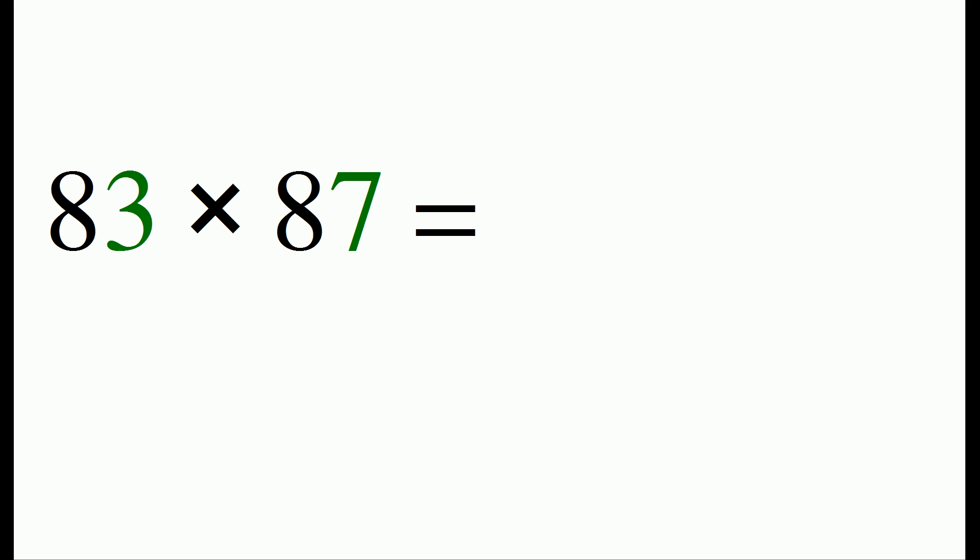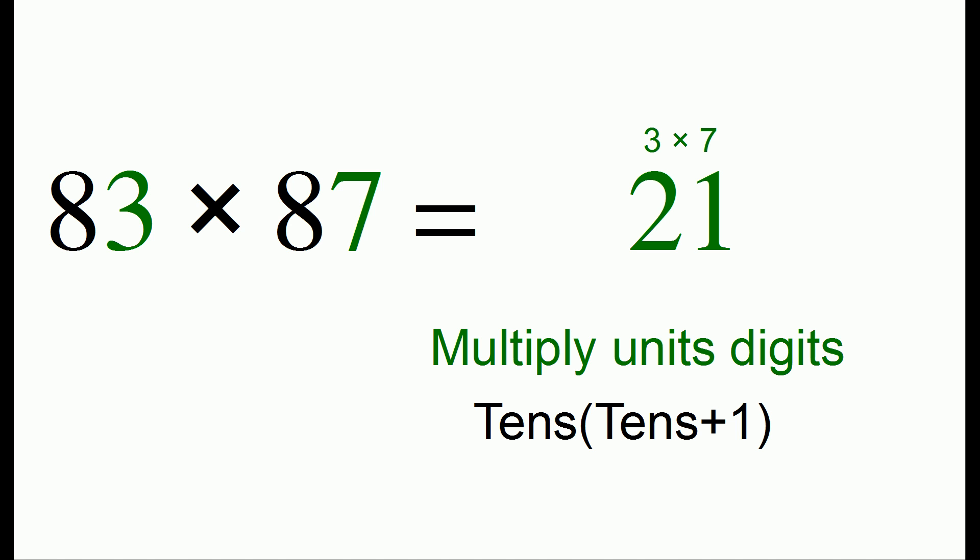So the trick you want to do, the first step is you multiply the units digits together which is 3 times 7 which gets 21. The second step is you take the tens digit and multiply it by one more than itself. In this problem the tens digit is 8, so we take 8 times one more than itself 9 and that gives us 72. And that's our answer. 83 times 87 is 7221.